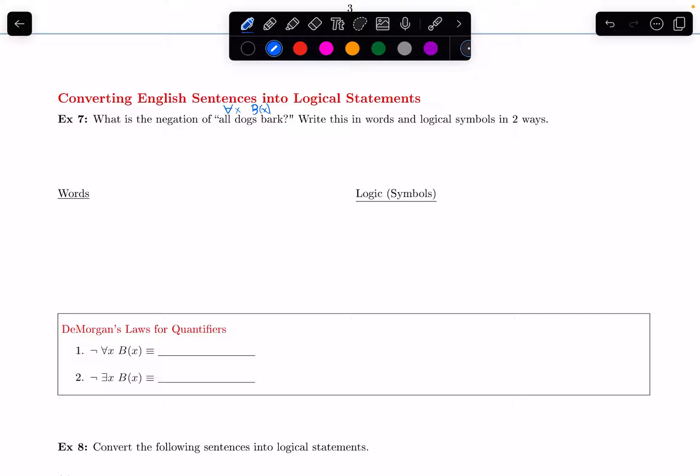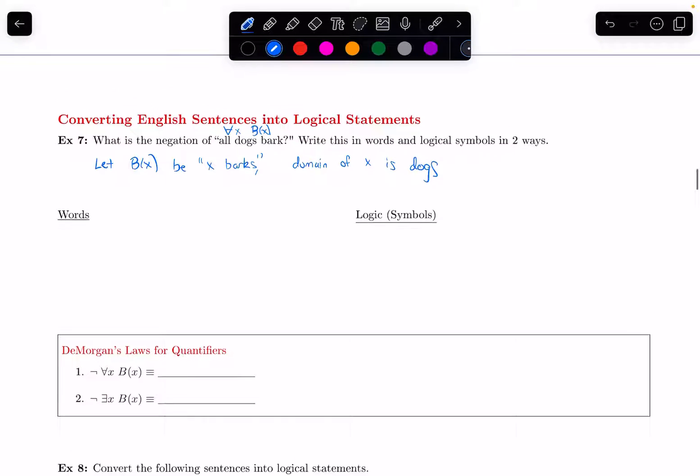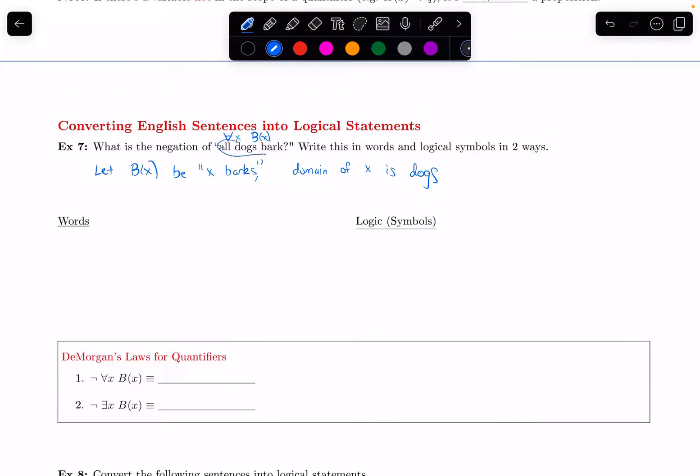Let's say what these are more formally. I'm going to let B of X be the propositional function X barks. But what is X like? What can X be? I need to specify that by indicating the domain. I'm going to let the domain of X be dogs. So this statement, all dogs bark, I can express using the symbols for all X, B of X. For all dogs X, X barks.